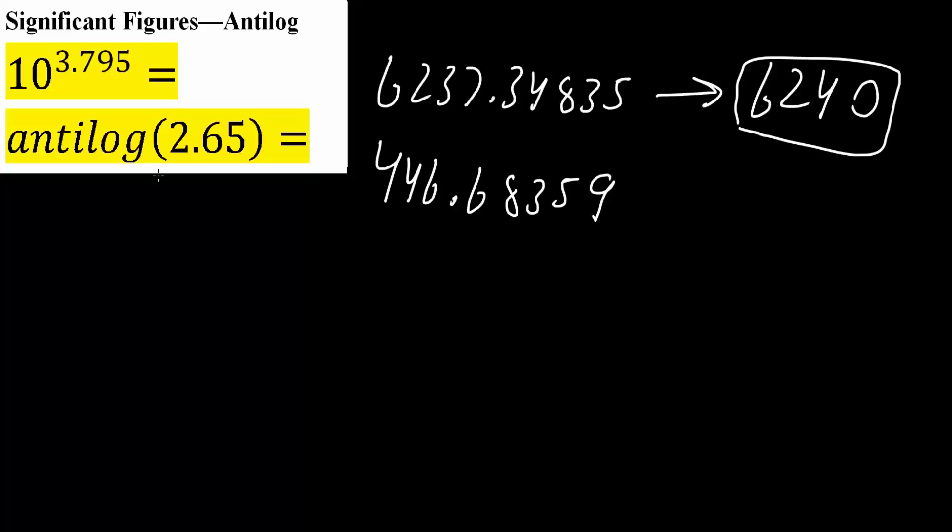So we have 0.65. We ignore the 2. 0.65 is 2 significant figures, and so our final answer would be 450, 2 significant figures. And that's all we need to do for these two problems.